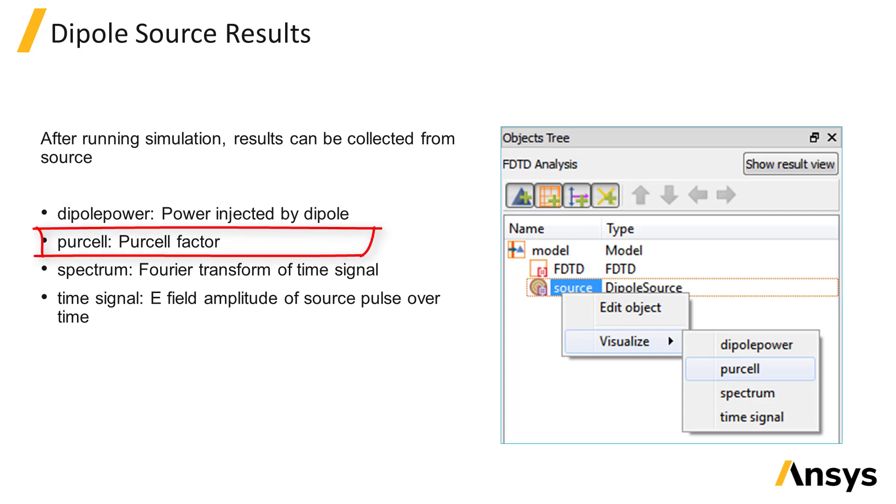The Purcell result gives the Purcell factor as a function of frequency. Spectrum gives the Fourier transform of the time domain source pulse, and time signal gives the time domain amplitude of the source pulse.